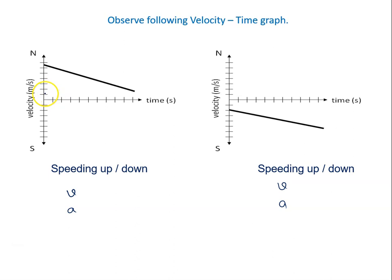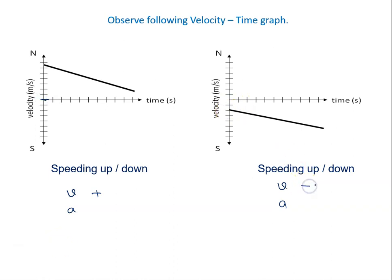In the first graph, the left-side graph, velocity is positive because it is above the origin. In the second graph, velocity is negative because it is below the x-axis on the velocity-time graph. Now we will calculate the acceleration.